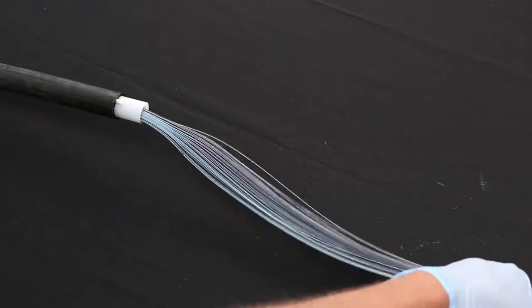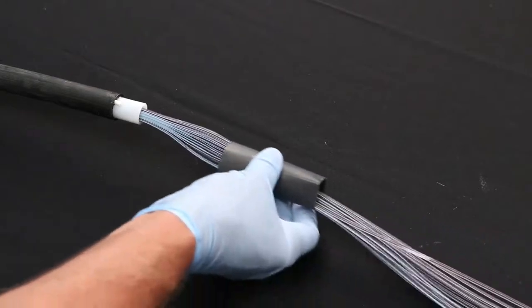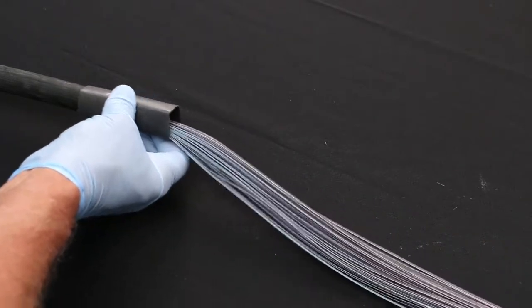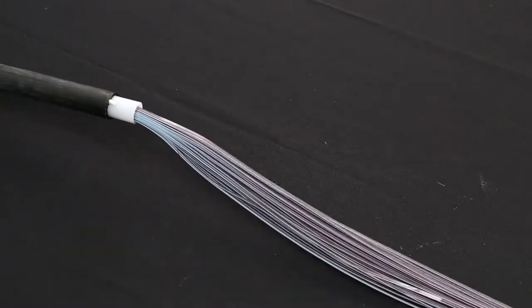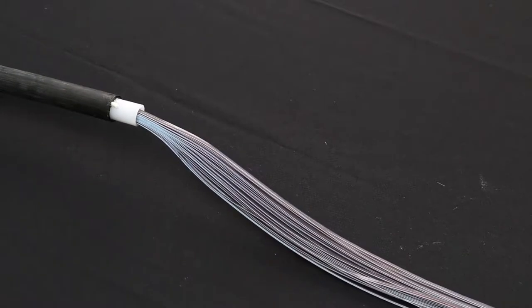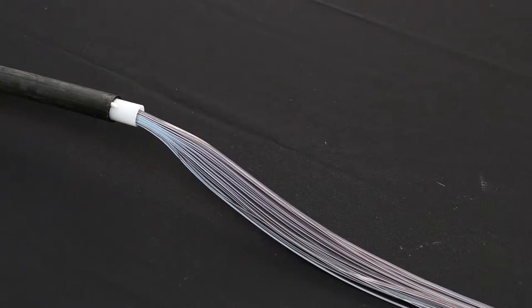Slide a 2.5 inch long section of 1.25 inch diameter non-adhesive heat shrink tubing over the end of the cable and beyond the cut back length. Position the heat shrink out of the way. It will be used in a later step. Do not shrink the heat shrink tubing yet.